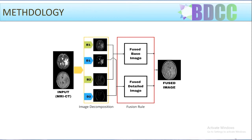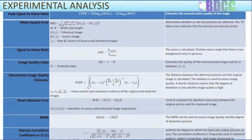Moving towards the experimental analysis, we need an image quality assessment. There is a significant degree of structure in natural picture signals; their pixels display strong relationships especially when they are spatially close, and these dependencies contain crucial information about object structure. Most quality metrics are based on linear transformations to decompose picture signals. To prove the effectiveness of any fusion process, the findings must be verified in terms of visual quality and fusion parameters. Visual examination is the best approach to assess the quality of the final image.